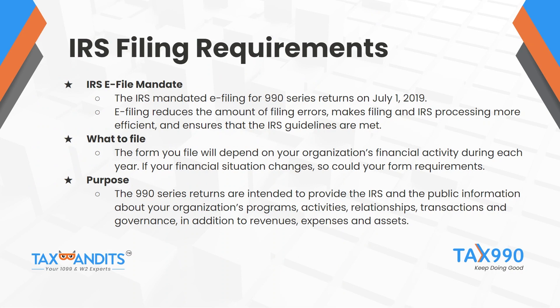The IRS mandated e-filing for the 990 series returns on July 1, 2019. Organizations filing a return with a tax year beginning date after July 1, 2019 are required to e-file moving forward. E-filing reduces the number of filing errors and helps ensure that IRS guidelines are met, meaning calculations are more accurate and the information provided matches what's in the IRS database. It also makes filing and processing more efficient and provides quicker turnaround time on updated form status.